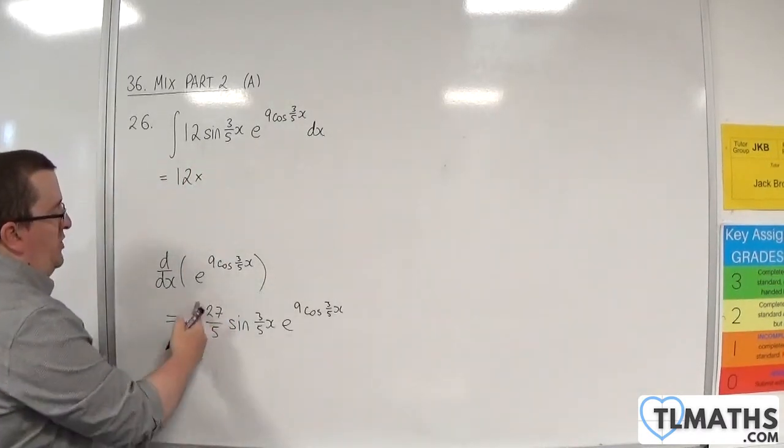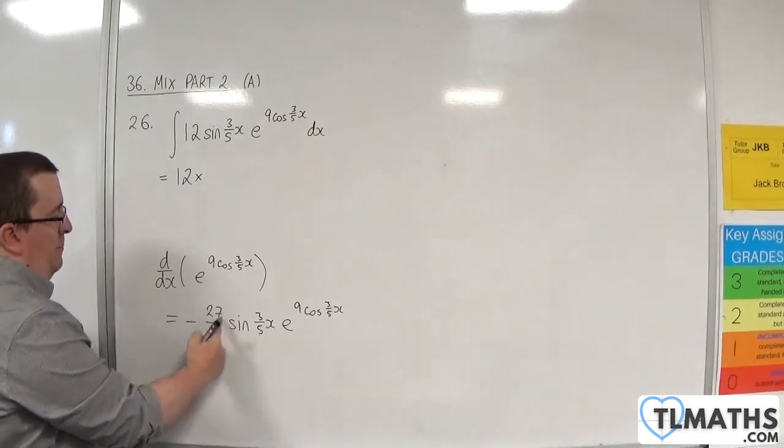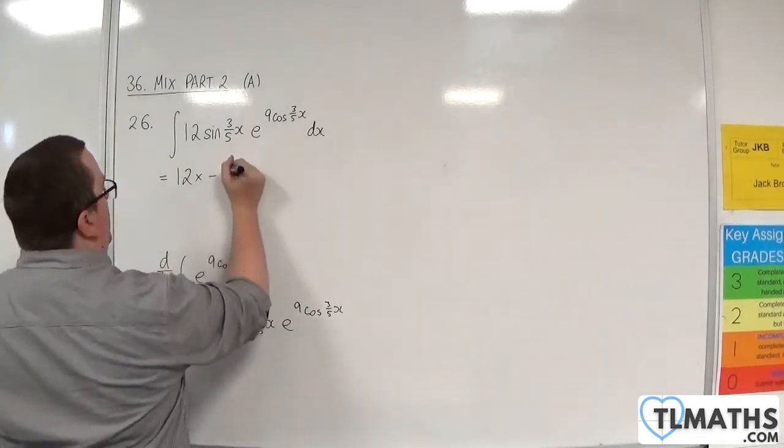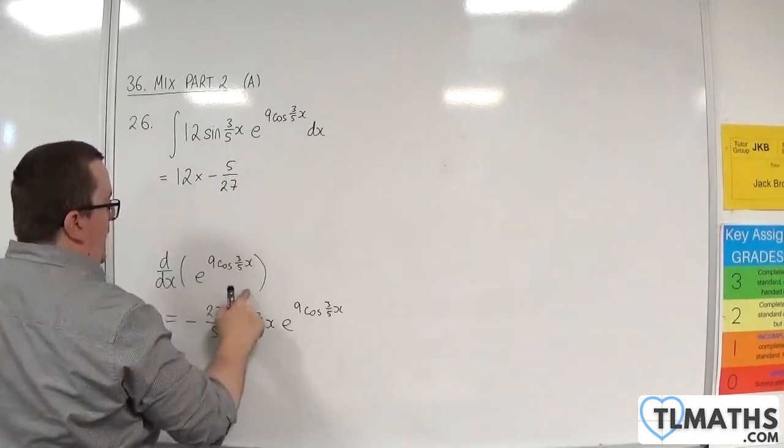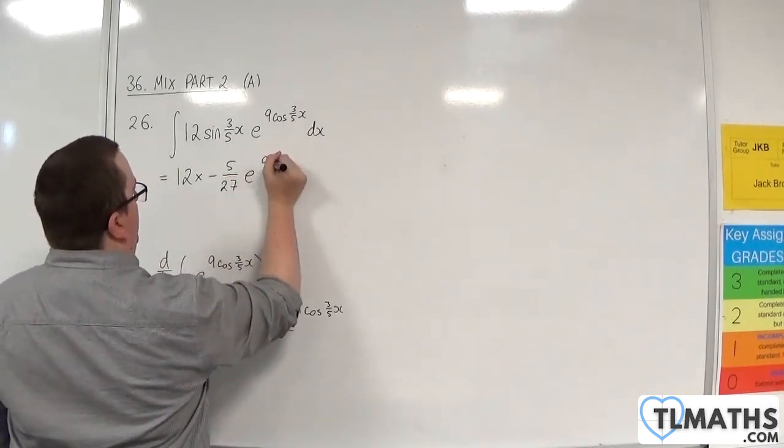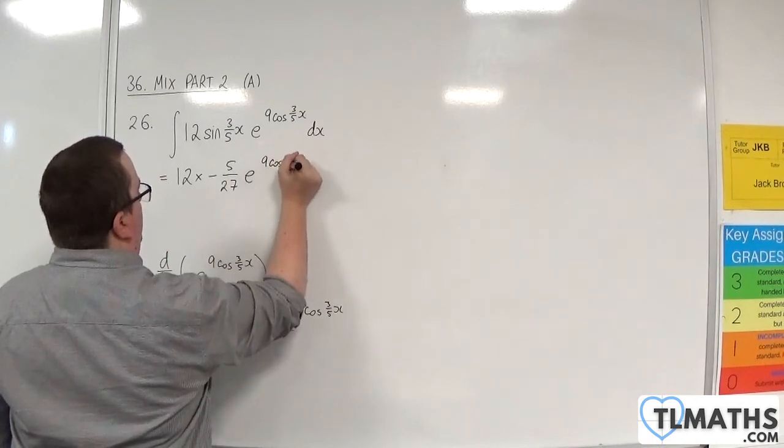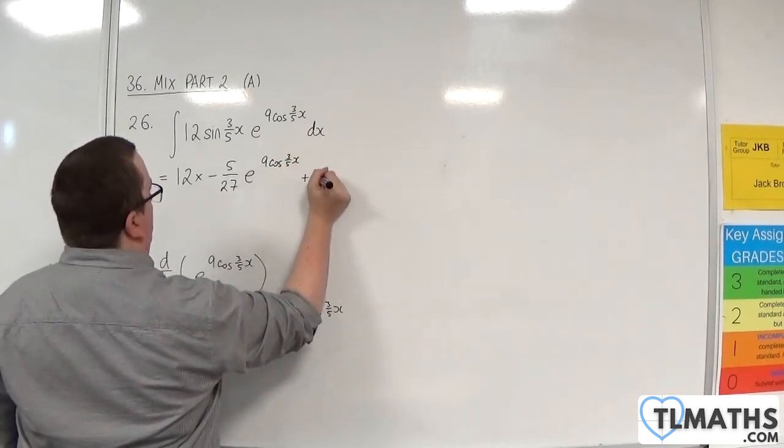And we need to use the reciprocal of this minus 27/5, so minus 5 over 27, e to the 9 cosine of 3/5 x, plus a constant c.